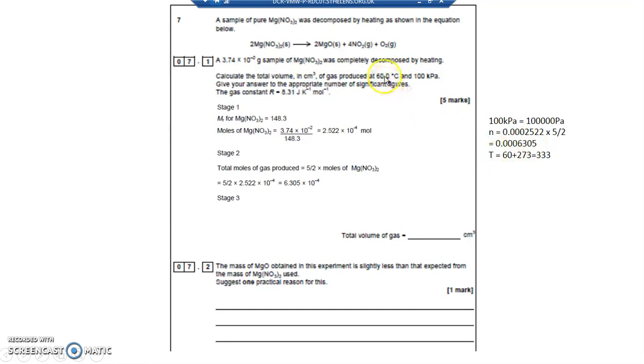Temperature is 60 degrees C. It needs to be in Kelvin. So to convert degrees C into Kelvin add on 273. That works out as 333. I think I'm now ready to do PV equals nRT. I've not got V. That's what they want me to work out.